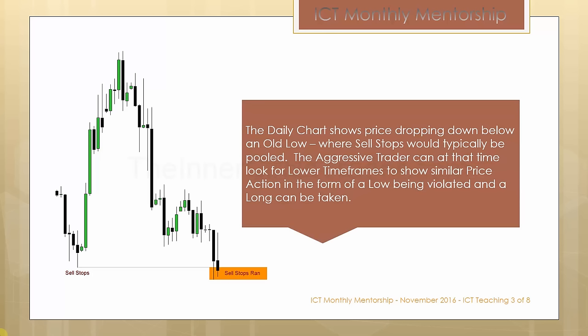Looking at this daily chart, you see price dropping down below an old low. This is typically where sell stops are going to be residing — what we call a liquidity pool. Sell stops will pool below this old low, and everyone wanting to go long would have a sell stop right below that. Because everyone's doing that same idea of putting a sell stop there, that's where the idea of a liquidity pool comes in — all those orders pooling together and creating a pocket of selling interest.